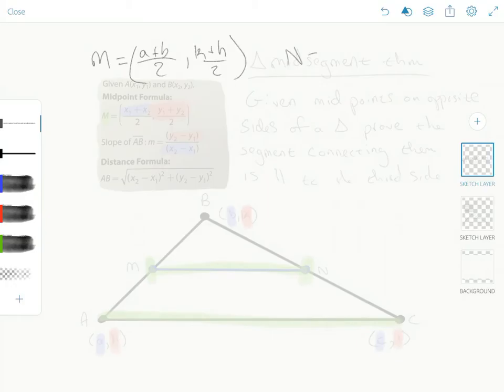And then the location of point N follows a similar logic, the X coordinates are B and C. So for the midpoint X coordinate, that's B plus C over 2. And then the location of point N, that is going to be K plus L over 2.